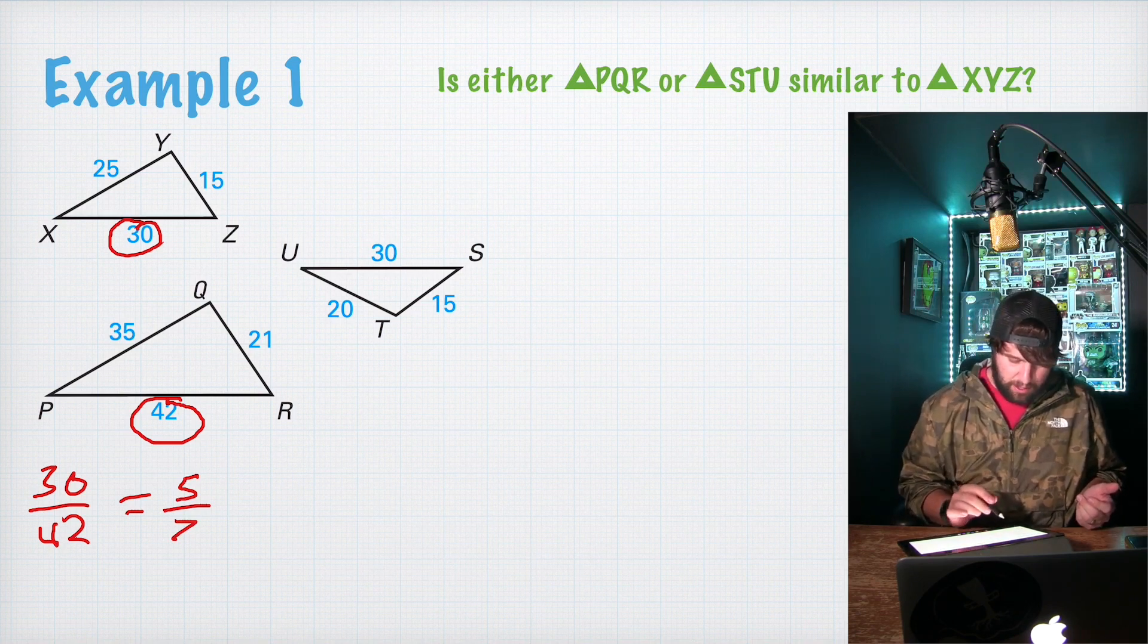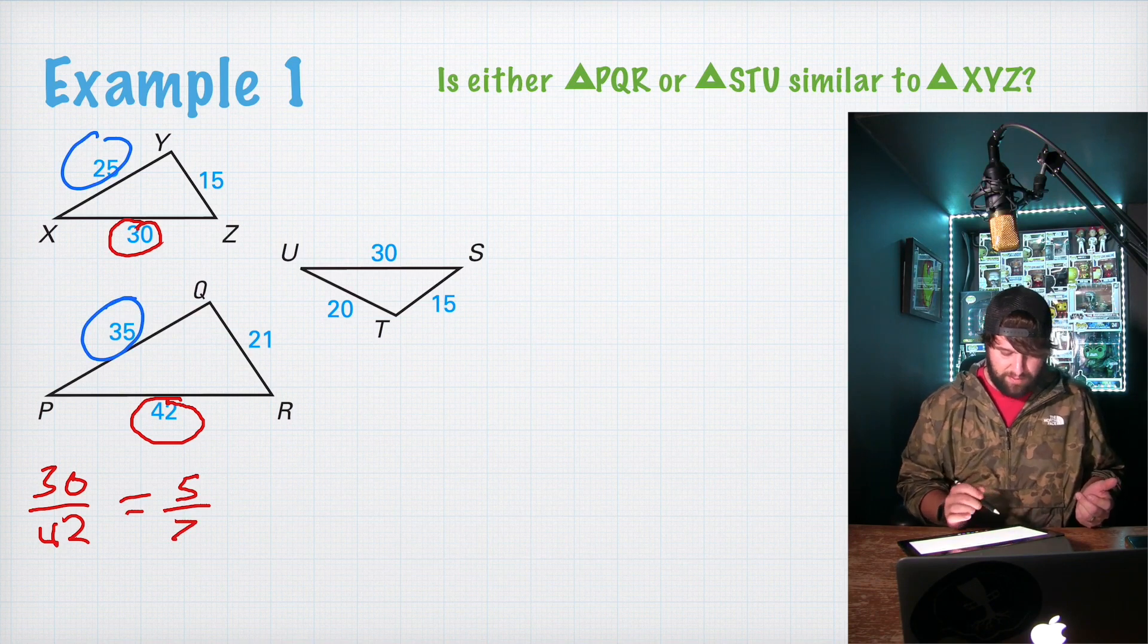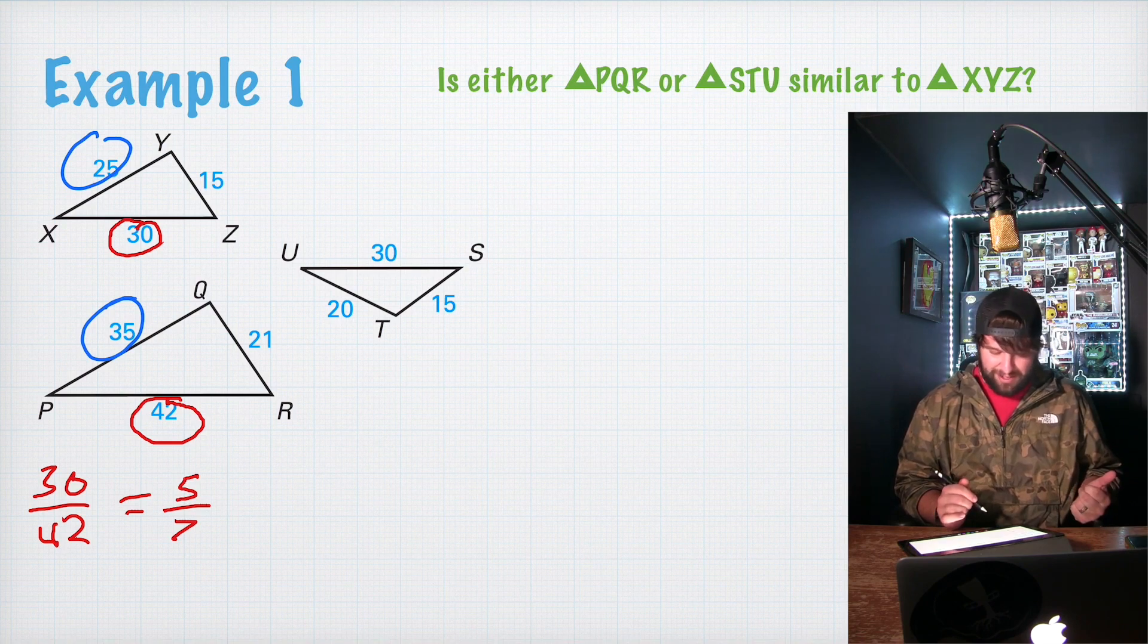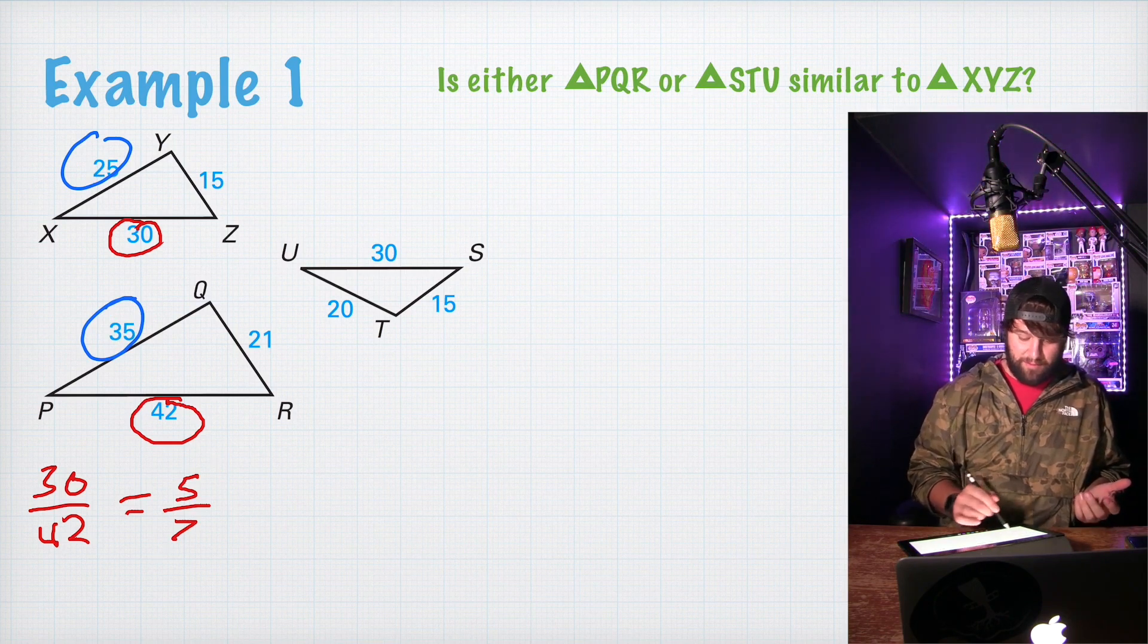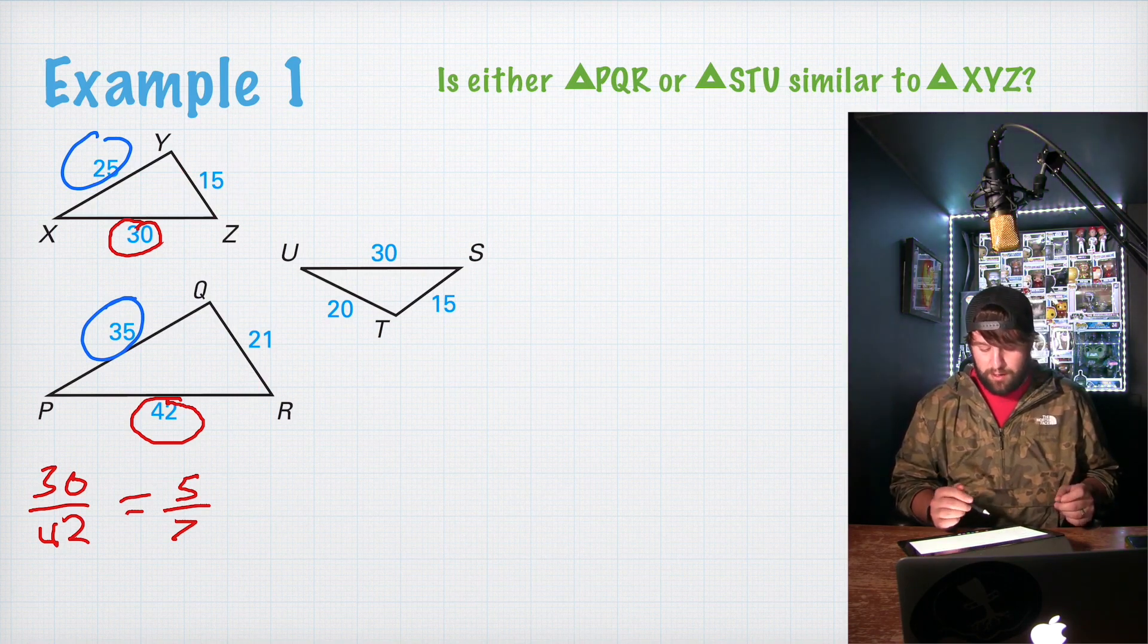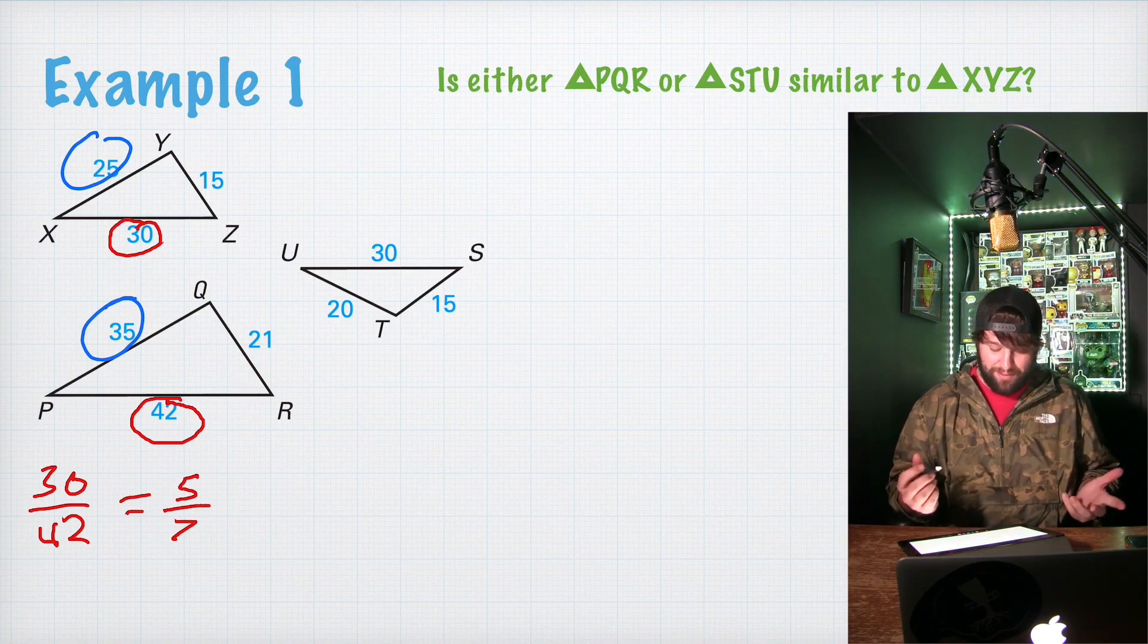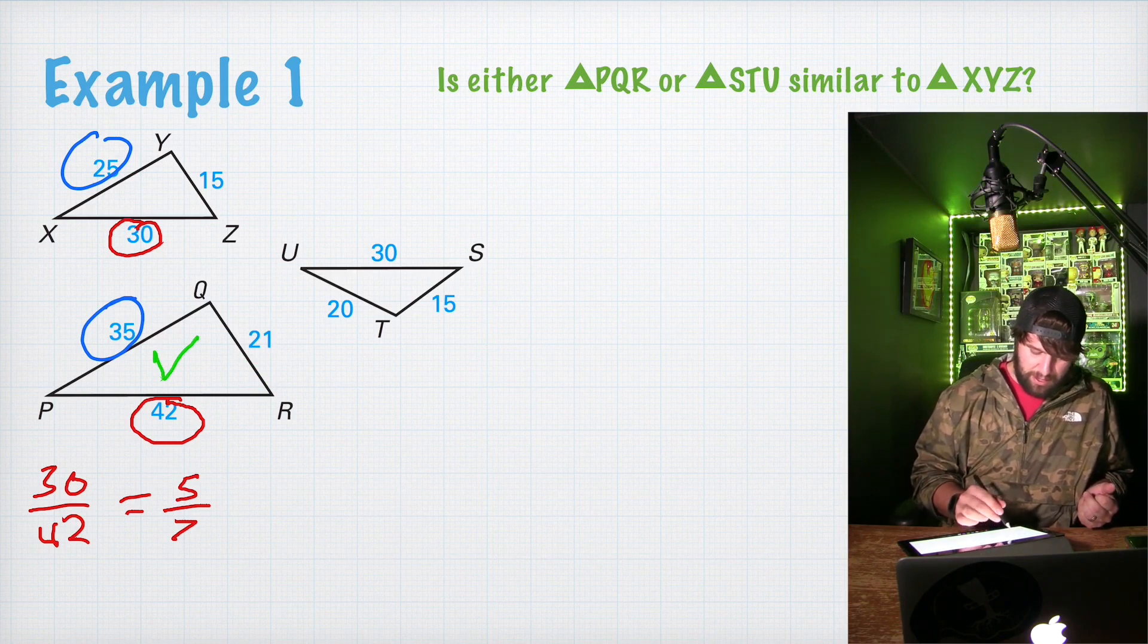Let's go ahead and pick the middle side. 35 and 25, both divisible by 5 to give us 5 over 7. As long as all the corresponding sides come out to be 5 over 7 at this point, we're good to go for those two triangles. So let's compare 15 and 21. Divide both of those by 3 to give us 5 over 7. So this one is good.